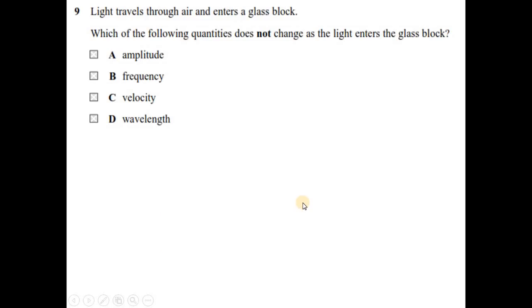Question number 9. Light travels through air and enters a glass block. Which of the following quantities does not change as the light enters the glass block? So it is refraction. During refraction, wavelength and velocity change, but frequency stays the same. Frequency during refraction is the only quantity that stays the same. Wavelength changes, velocity changes, and amplitude also changes. So option is B, frequency, which is not changing during refraction.